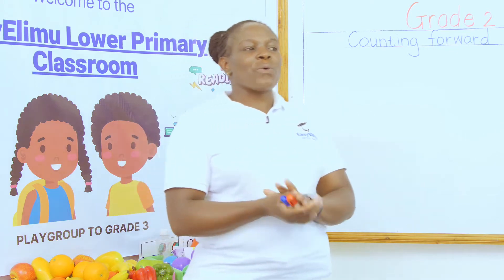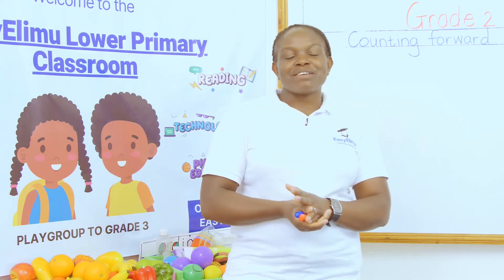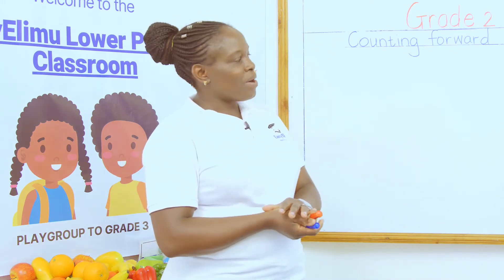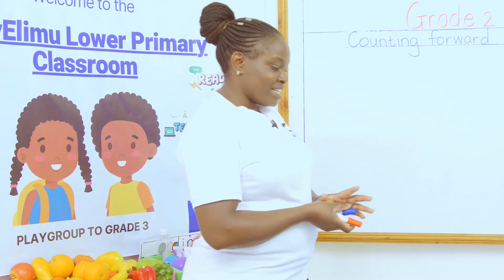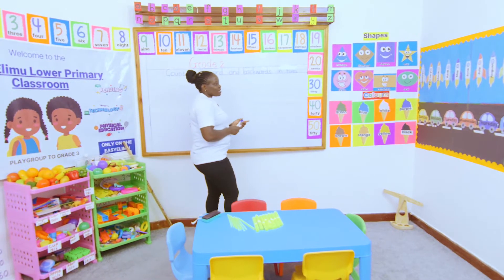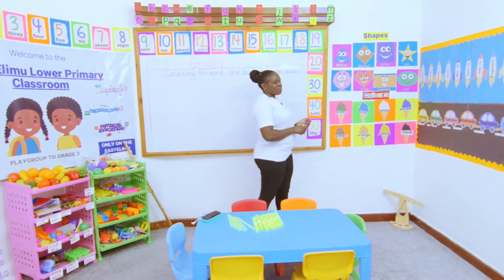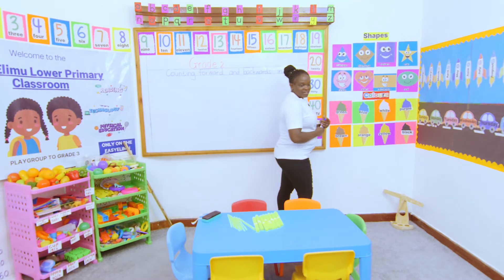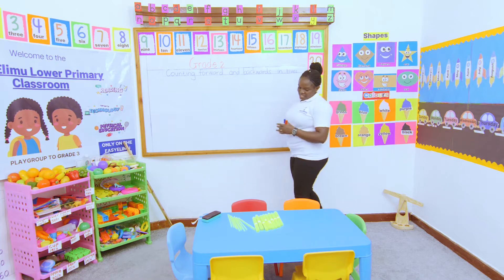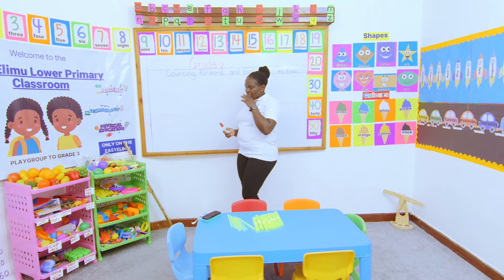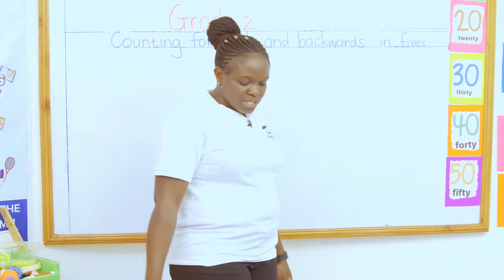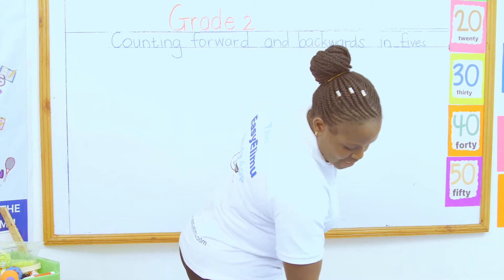It's your teacher. Welcome to Easy A Little Learning Simplified. We've been counting numbers — we've been counting forward and backward in twos, forward and backwards in fives. Now we want to use the counters. What if I'm told to count in fives using the bundles of sticks?